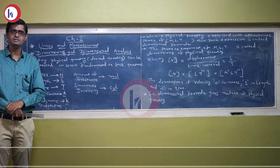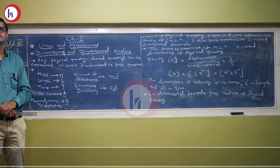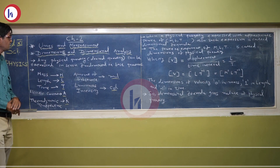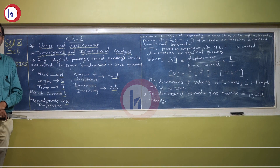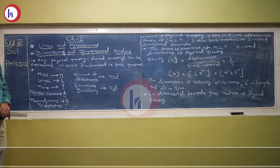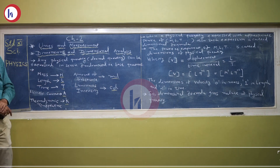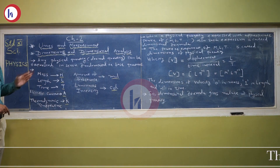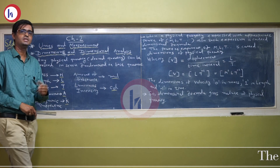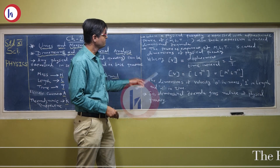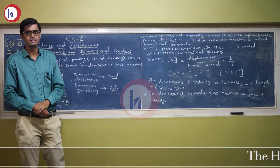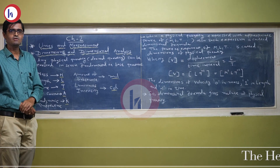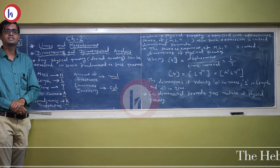Today's topic is from 11 science, chapter 2: dimensions and dimensional analysis. What is dimensions and dimensional analysis? For that we will understand the derived quantity — any physical quantity which can be derived from the seven fundamental base quantities. If you consider velocity, velocity can be written as displacement upon time. So we can say velocity is a derived quantity. There are seven fundamental quantities in the SI system.